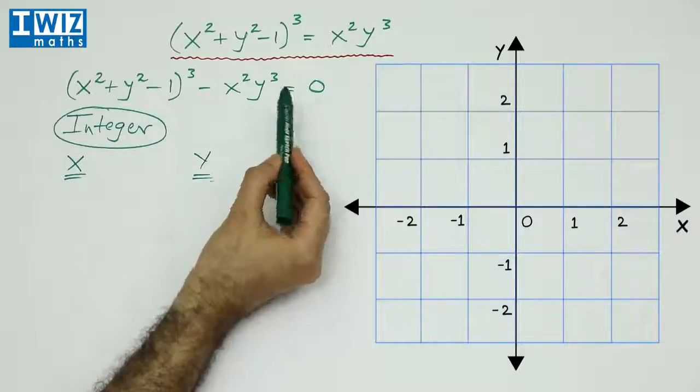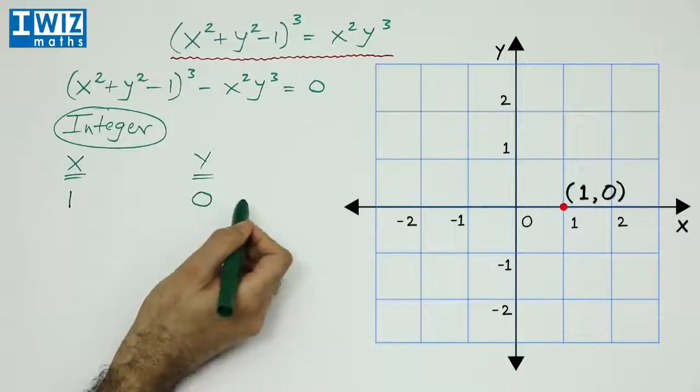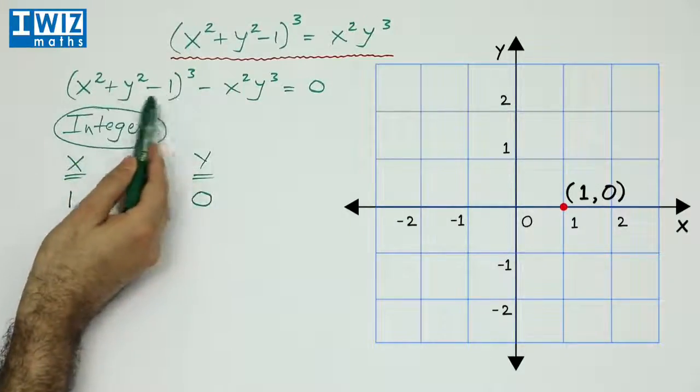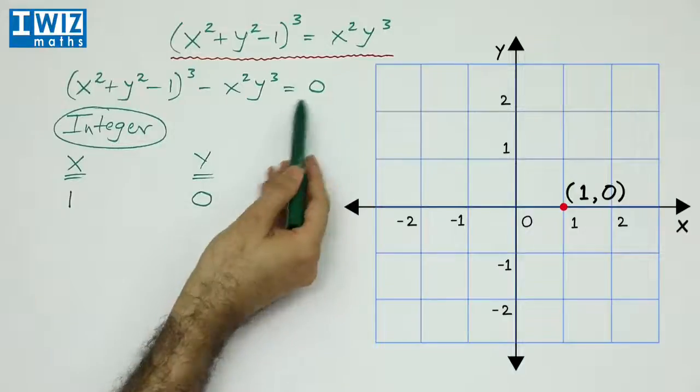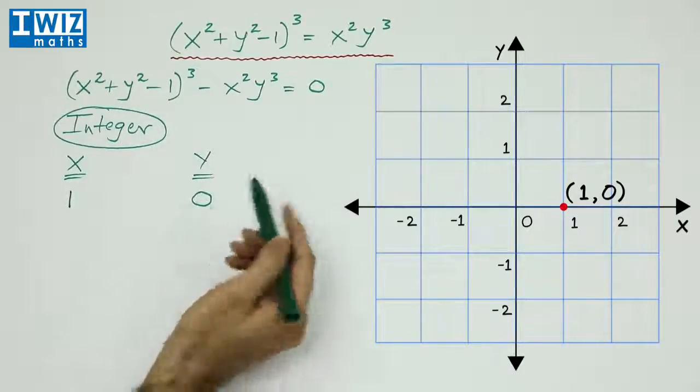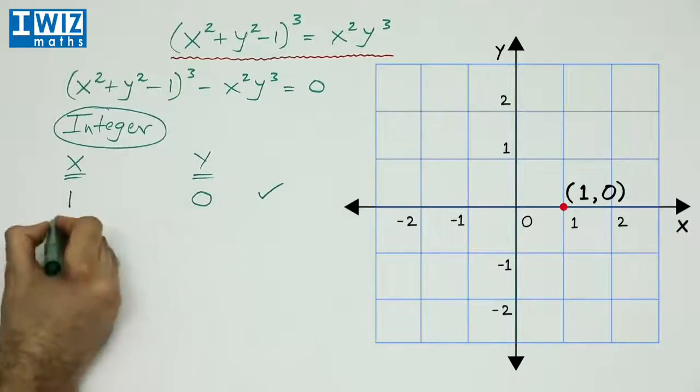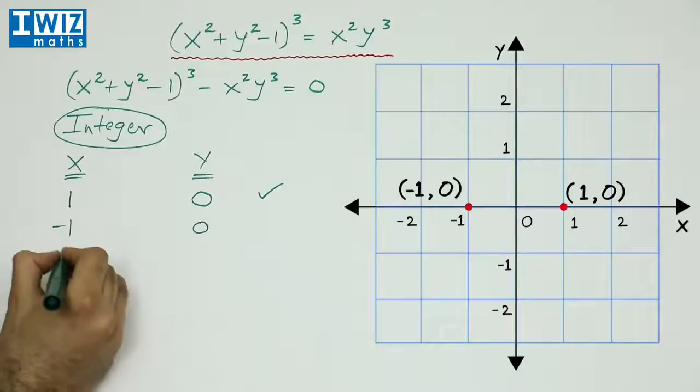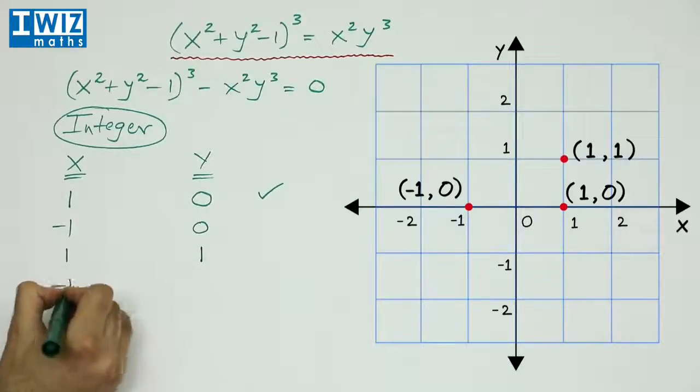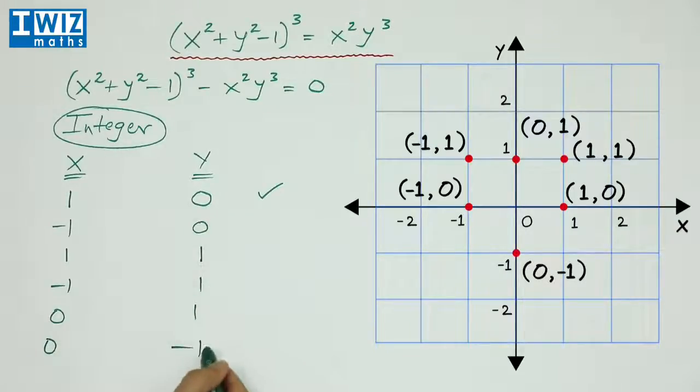So let's put in x is equal to 1 and y is equal to 0. So we will get 1 plus 0 minus 1, so that is 0, minus 1 times 0 which is 0. So essentially x is equal to 1 and y is equal to 0 is a solution. In a similar manner, we can actually find other integer solutions. So we can verify that (-1,0) is also a solution, (1,1) is also a solution, (-1,1) is a solution, (0,1), (0,-1) are all solutions.